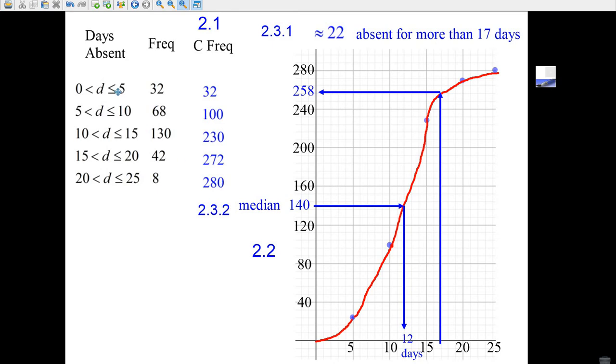Then you take 5 and graph it to 32. You'll have a graph like this: 5 gets graphed to 32, 10 gets graphed to 100, 15 gets graphed to 230, 20 gets graphed to 272, and 25 gets graphed to 280 right at the end. The end points here get graphed to the cumulative frequencies. And then you connect it in your best S curve. I had to do it with the Mimeo pad, so it's not so beautiful. But that's it. There's your S curve, there's your O'Give graph.